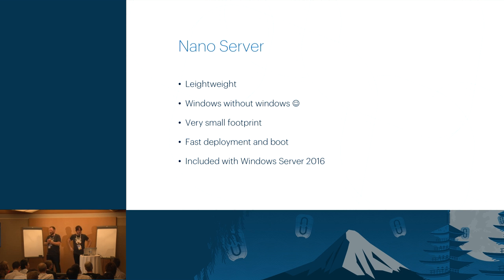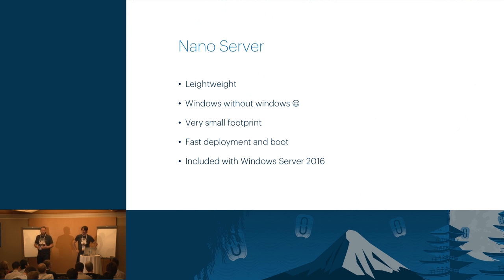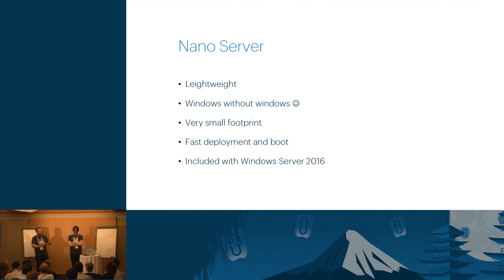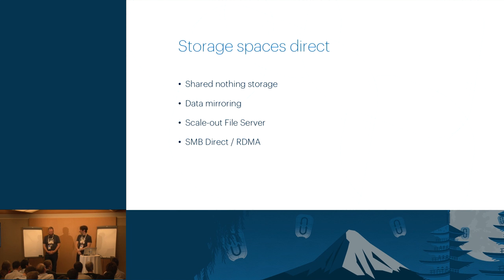Nano Server — welcome to the next generation of Windows Server. It's a micro version of Windows, about 400 megabytes. It's lightweight, it can be PXE-booted — it's Windows without Windows. Not Windows Core, Windows without Windows. Extremely small footprint, extremely fast to deploy. It's included as part of Windows Server 2016 and has Hyper-V, onboard storage, and whatever else, including Storage Spaces Direct.